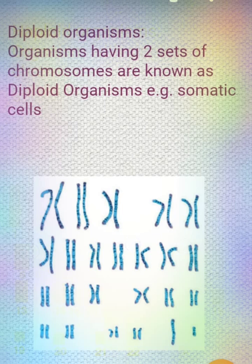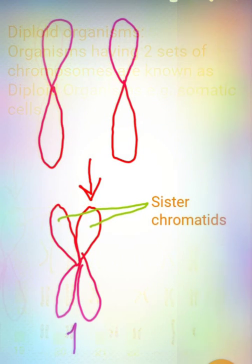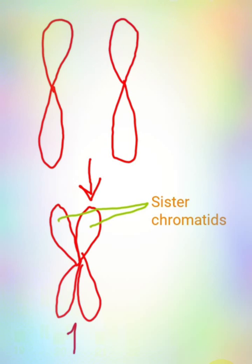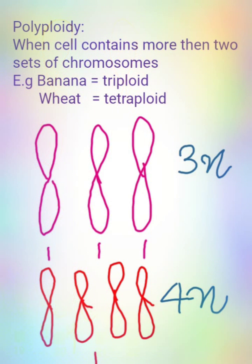Next is the structure of a chromosome. This is a single chromosome or single chromatid. When two chromatids combine they form a pair of chromosomes — for example, this is chromosome number one, and the pair of chromosome number one. These two are known as sister chromatids.